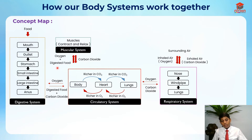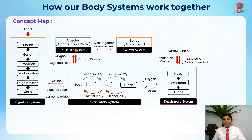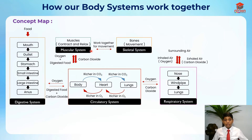From the muscular system we can link to the skeletal system. These two systems work together for movement. The skeletal system has bones for movement, and the muscular system has muscles that contract and relax. When muscles contract, the bones can move; when muscles relax, it is harder to move. This concept map shows how all the systems are linked and function together.